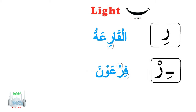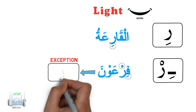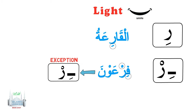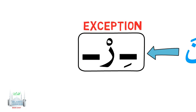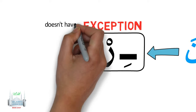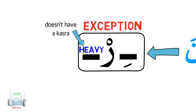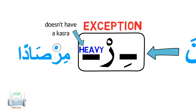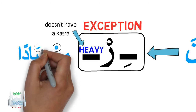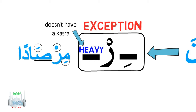Here is an exception. If the Ra has a sukoon and the letter before it in the same word has a kasra, but the letter after the Ra sakin is a heavy letter and doesn't have a kasra, it is pronounced heavy. For example, we see a Ra with a sukoon. We look at the previous letter — it has a kasra, so it appears the Ra will be a light letter. But then we look at the letter after the Ra. It's a heavy letter. If the heavy letter doesn't have a kasra, the Ra will be read heavy; otherwise it will stay light.